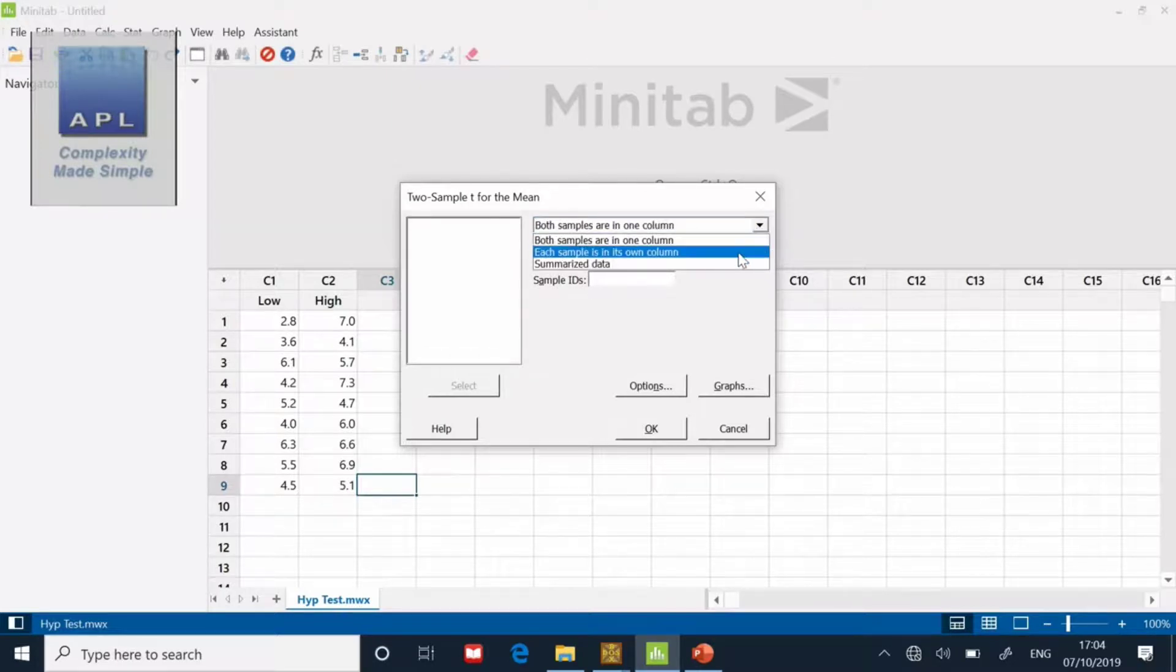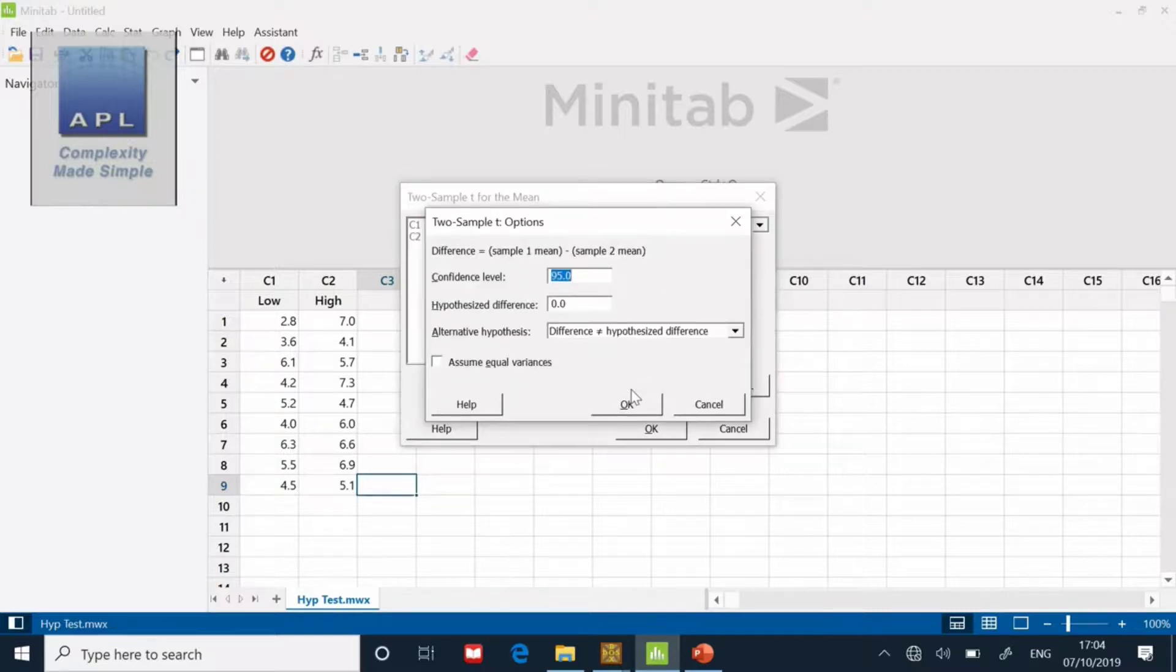And now I just need to tell it: sample set, sample set one, sample set two. Let's have a quick look at the options.